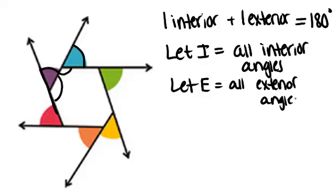So what we know is that I, all the interior angles, plus E, all the exterior angles, has to equal 180 times the number of sides because that's how many pairs of interior and exterior angles there will be.